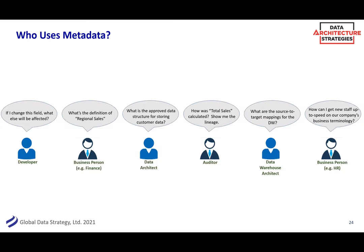We talked about the business person — how do we define regional sales? It could be a data architect or a citizen data scientist: what's the approved data set, how should I store it, how do I map that across? And we often forget just a regular person who joins a company and gets confused by the acronyms or how the company terminology works. Just like that Wall Street example — having that kind of common lingua franca of a company can be part of your metadata dictionary. So lots of good usages.